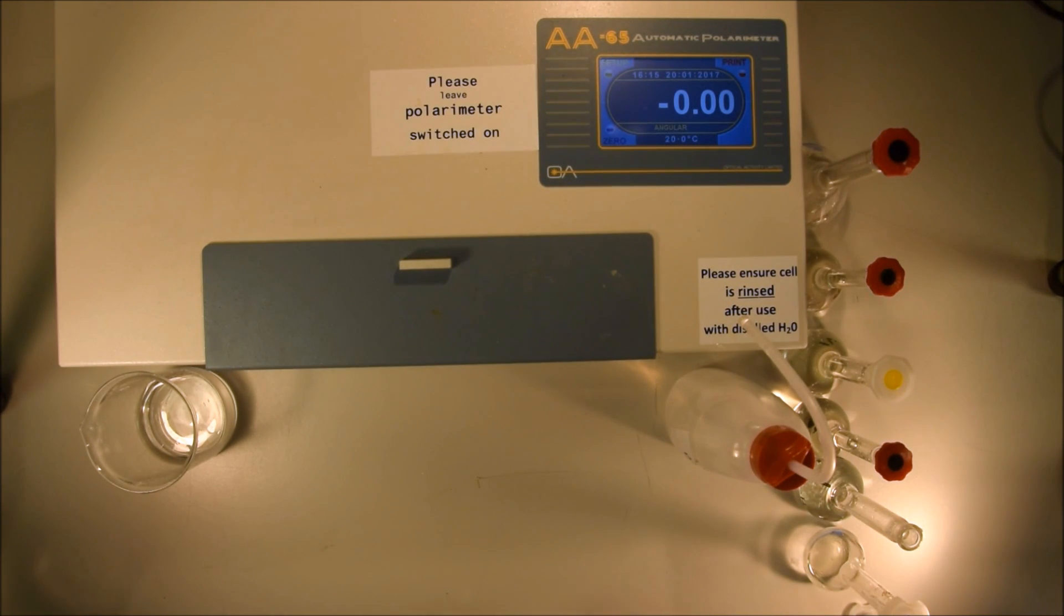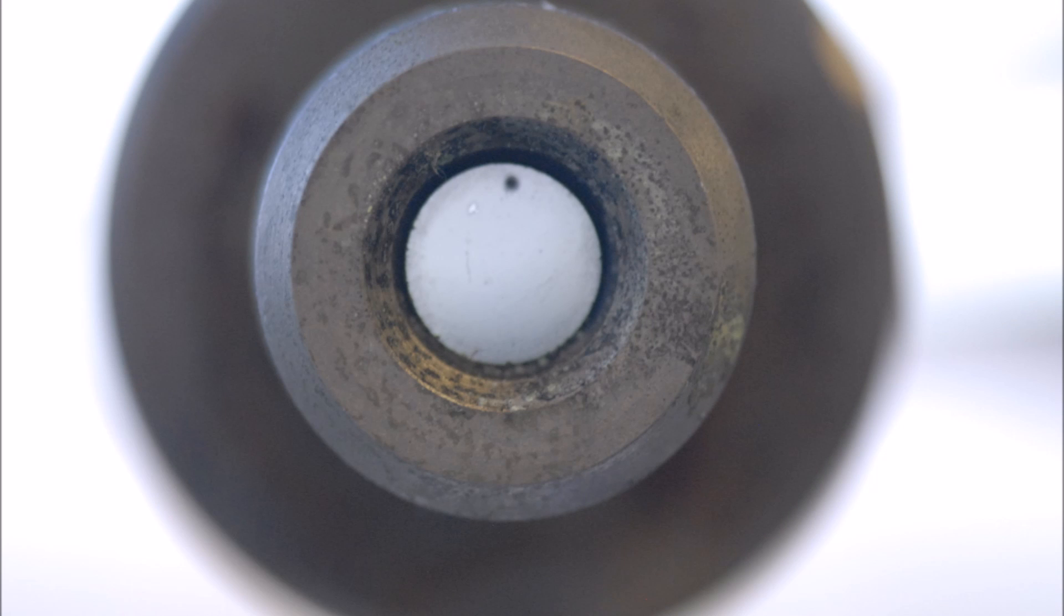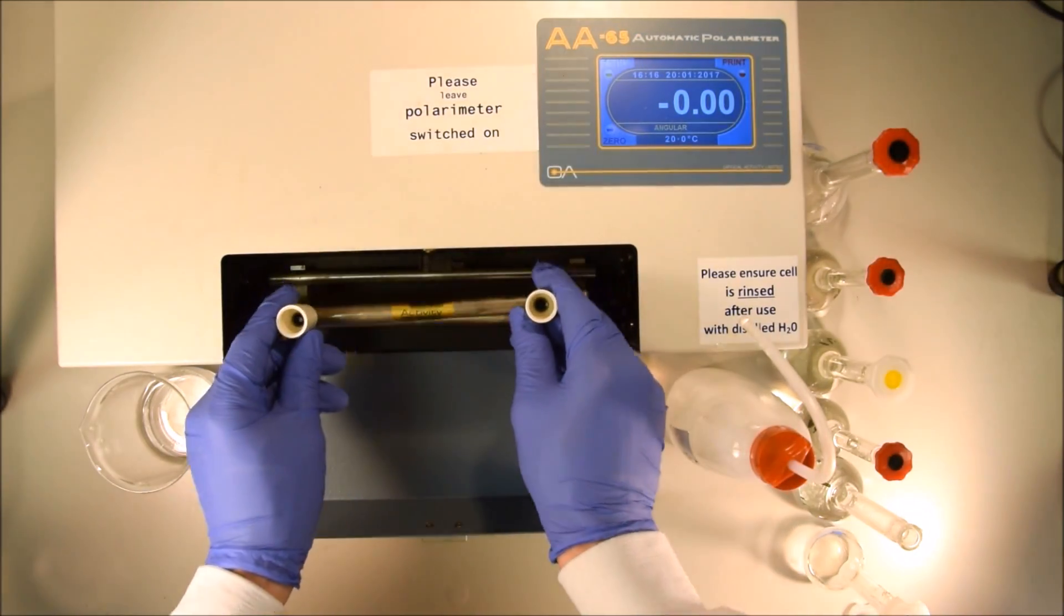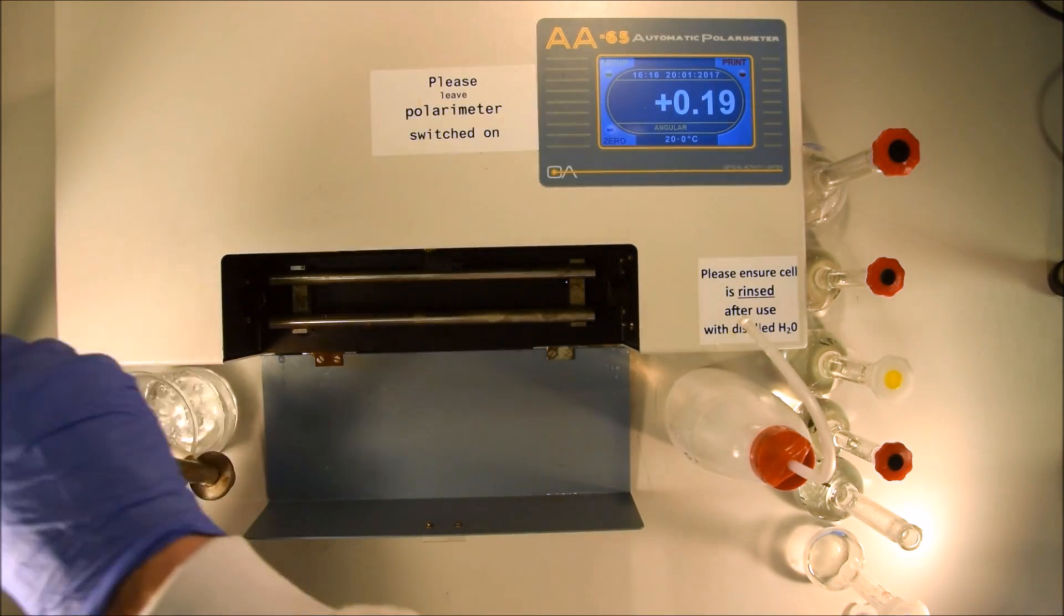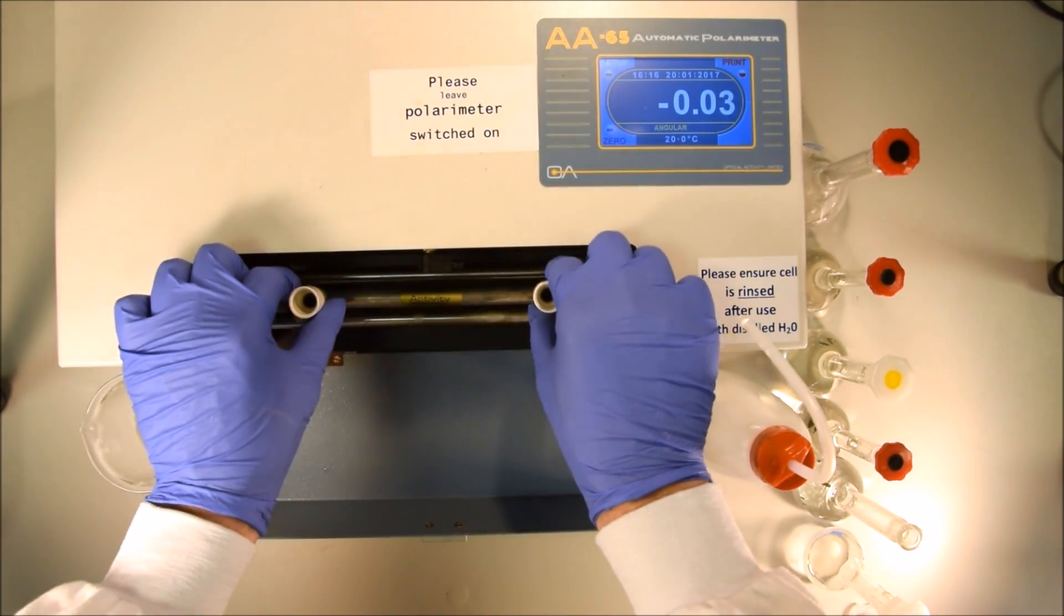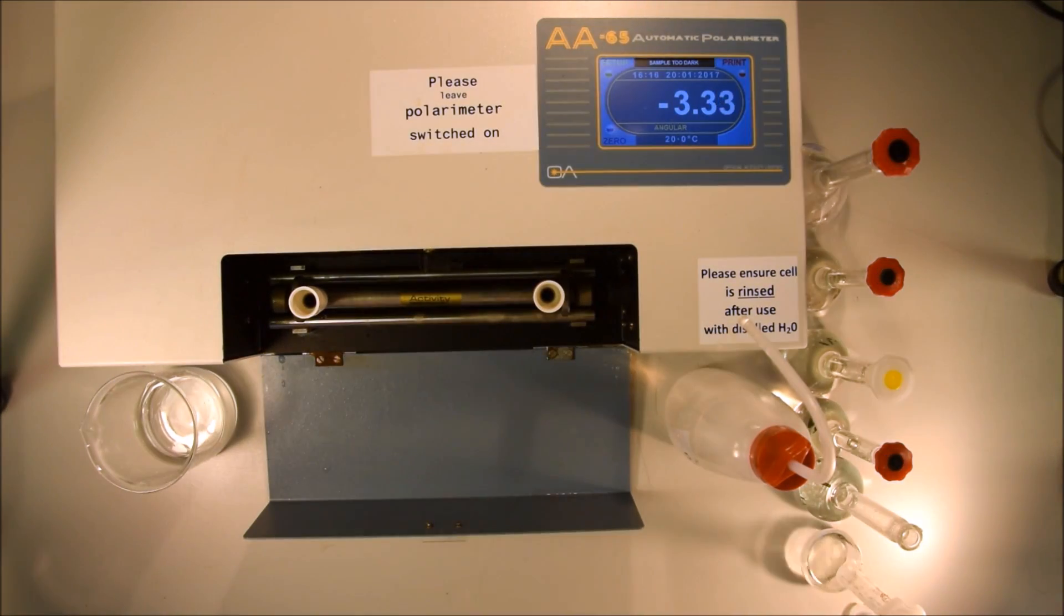Another thing you have to be careful about when filling your cell is that there are no bubbles inside. If there's no bubbles inside your cell, when you look through it, it should look like this. You can see from one end to the other, there's two quartz windows on either end of the cell. On the other hand, if you don't have your cell completely full and you have a bubble in the way, you'll see what happens now.